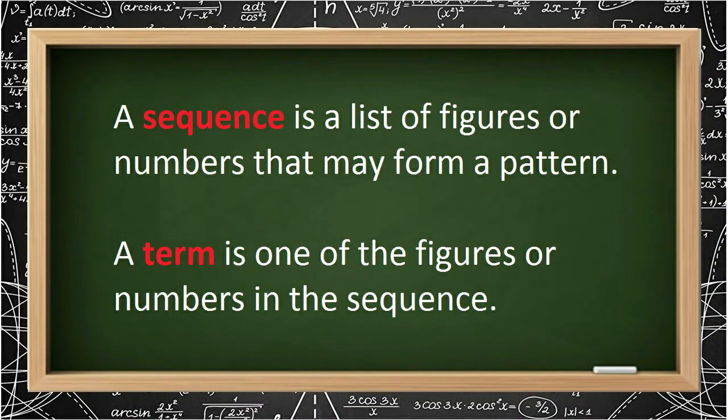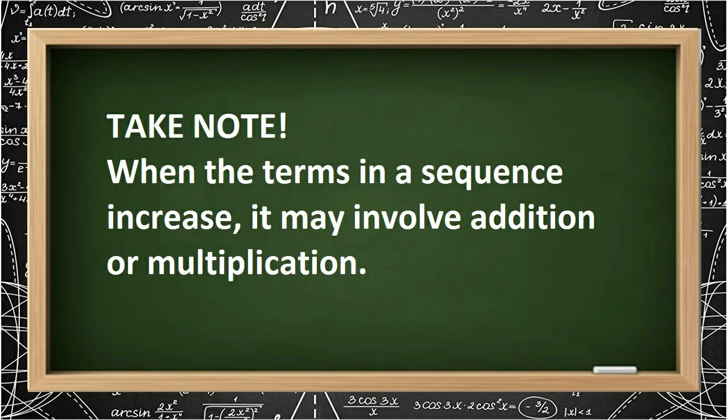Before we go deeper into our lesson, remember this: a sequence is a list of figures or numbers that may form a pattern, while a term is one of the figures or numbers in the sequence. Take note! When the terms in a sequence increase, it may involve addition or multiplication.